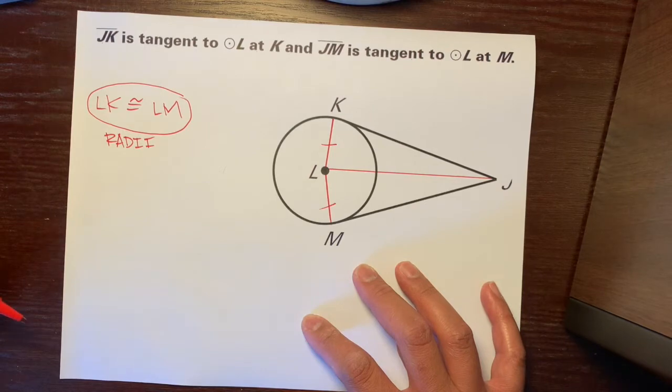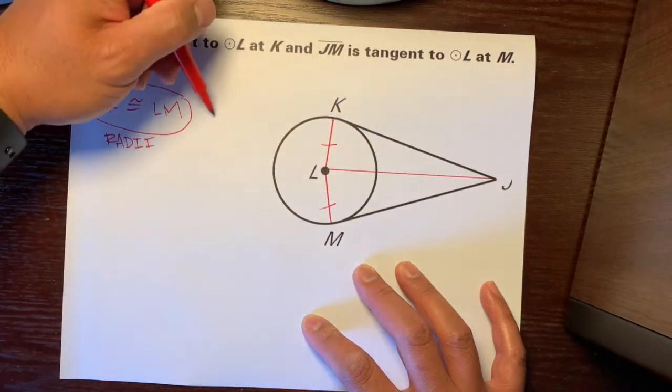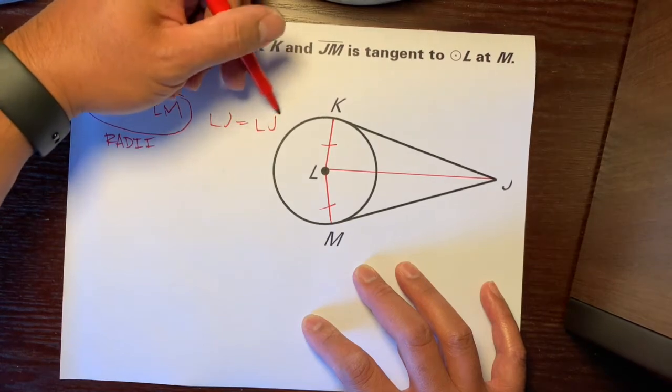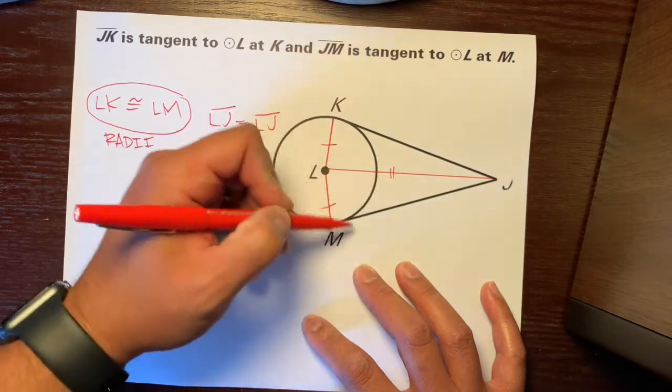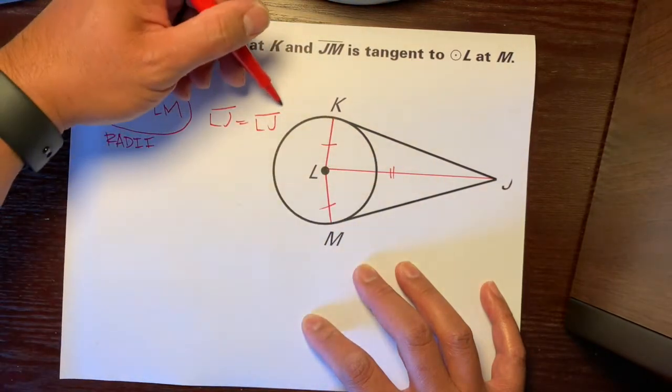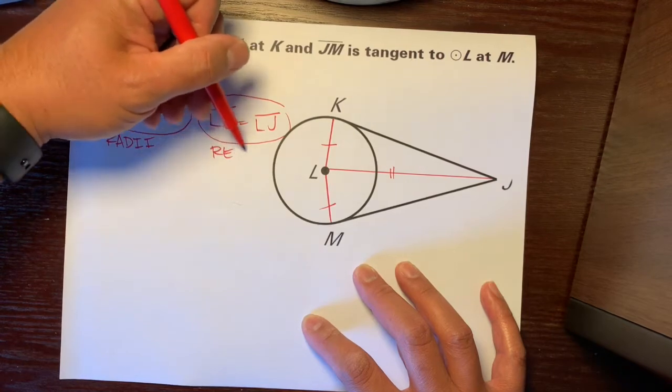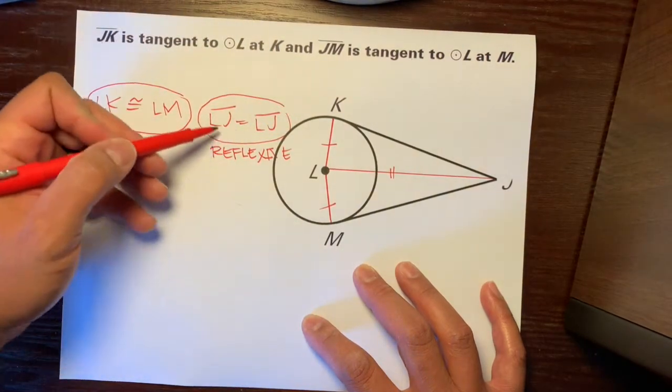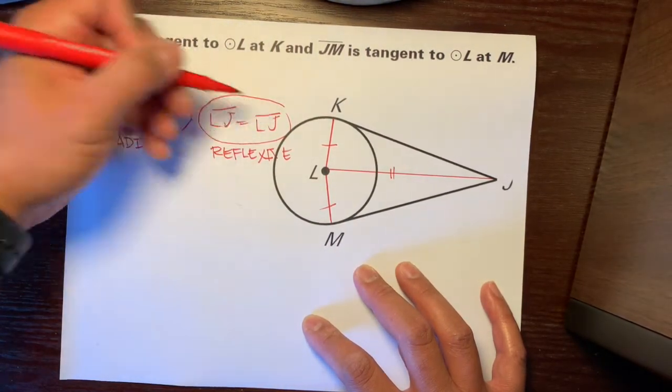Next thing that we can say is that, let's see, we can say that LJ is congruent to itself. So, this segment is congruent to itself, because both triangles both have LJ. And let's circle that, and we can say reflexive. So, whenever you state something is congruent to itself, then that is reflexive.